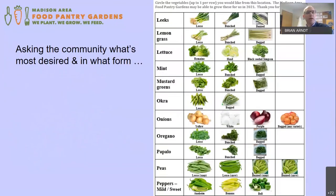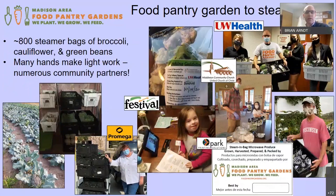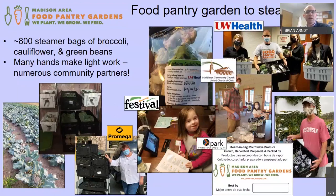In order to offer single-serving produce to match distribution needs during the pandemic, we put together about 800 steamer bags of broccoli, cauliflower, and green beans — thanks to community partners including Chef Kara from ProMega and UW Health Dietetics interns. We distributed a produce preference survey to pantry guests and pantry leaders — available in Spanish — asking what fruits and vegetables they'd like to receive and in what form. This will influence what we grow and guide collaboration with partners who can cut it, bag it, and bunch it. Second Harvest will also use these results to inform their farm plantings.